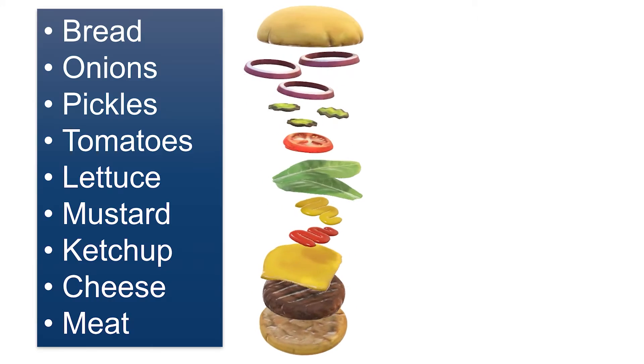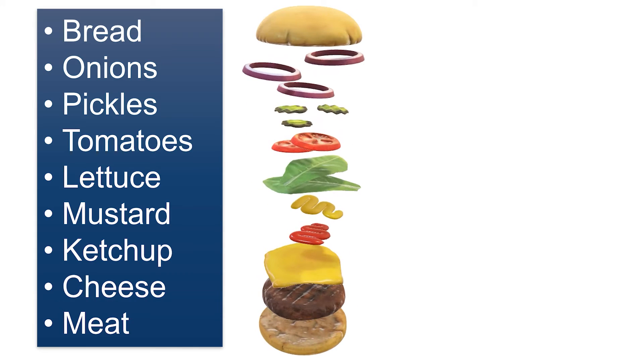You've got the bread, the lettuce, the onions, the tomatoes, the meat. You have to get these from different suppliers in most cases, and you have to make sure that it's there on time so that you can serve your customer at your restaurant and you don't want to ever be out of anything.